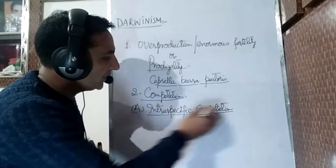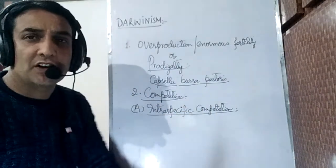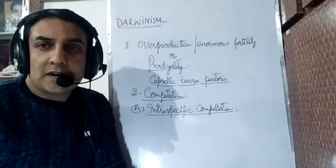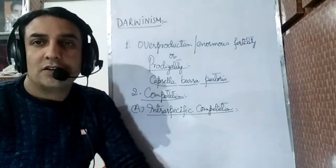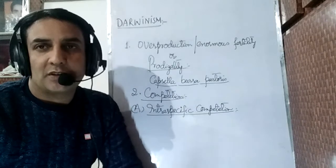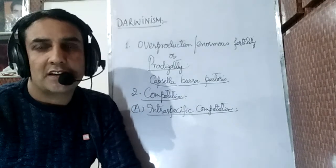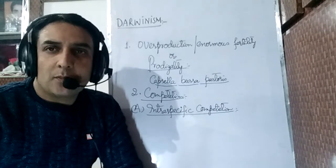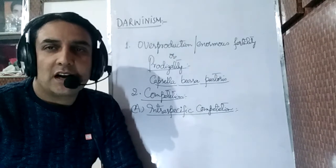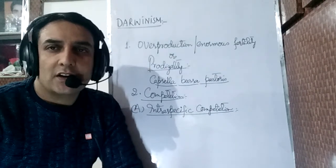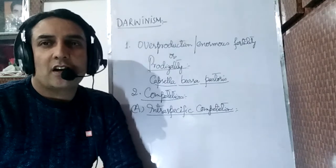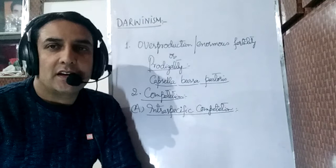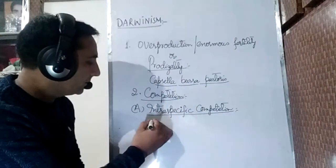Competition is threefold. The first type is intraspecific competition — competition which occurs between two individuals of the same species. For example, two dogs fighting for a piece of meat is a type of intraspecific competition. This is the most severe type of competition because the needs of organisms belonging to the same species are always the same. One important example of intraspecific competition is cannibalism.